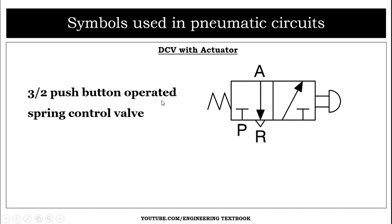This valve is push button operated with a spring return. When we press the push button, the valve moves to the actuated position. When we release the push button, the compressed spring releases and the valve returns to its unactuated position. This is the three-by-two push button operated spring return control valve.